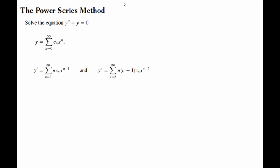...which is n(n-1)cn x^(n-2). I will point out here the importance of these indices. Remember, syncing the indices eventually will be very important. So now as we substitute these in, you will see there is a difference between n=2 and n=0 when they go in here.